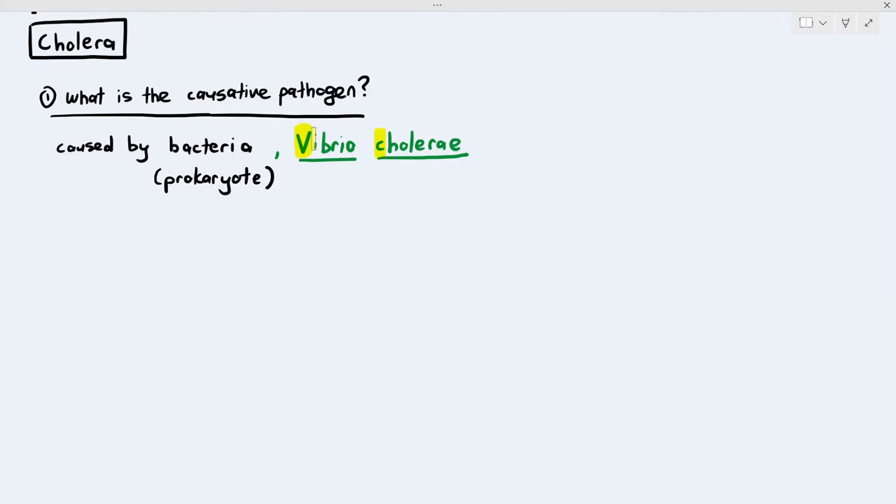The name of the bacterium that causes cholera is Vibrio cholerae. Vibrio is the genus and cholerae is the species. This is the binomial classification that is internationally accepted. When writing the name, the genus - the first letter V - has to be uppercase. The first letter of the species, C, has to be lowercase. In the exam, you have to underline the word Vibrio and cholerae as well.